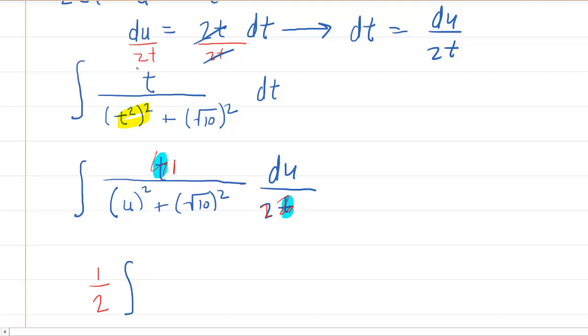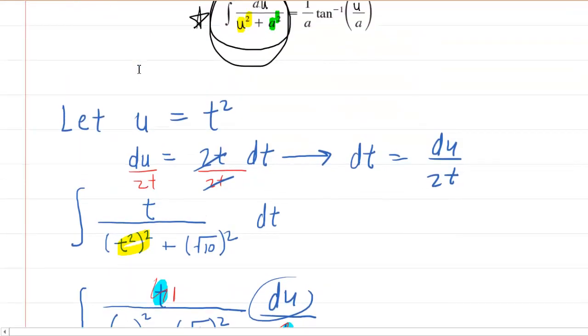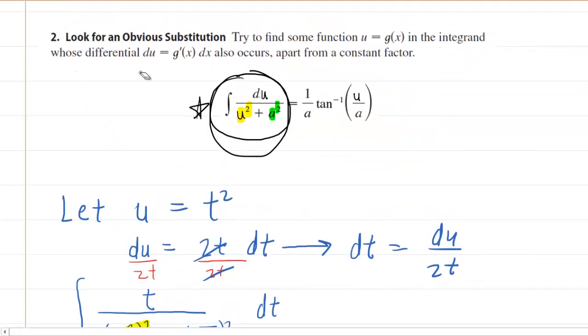Then you're left with the du in the numerator divided by the u squared plus your constant squared. This is really good because remember from earlier, our goal was to try to rewrite our problem so that it looked just like that form.